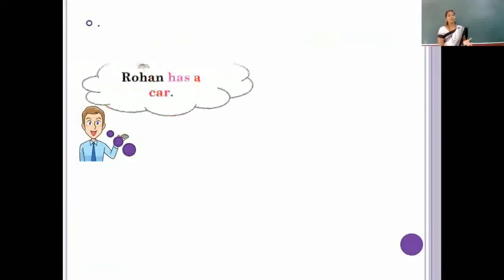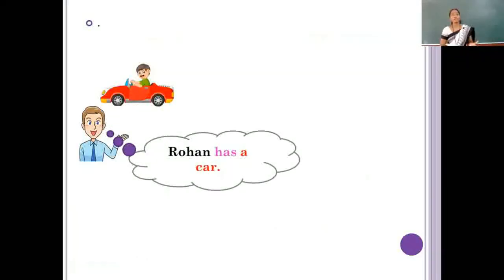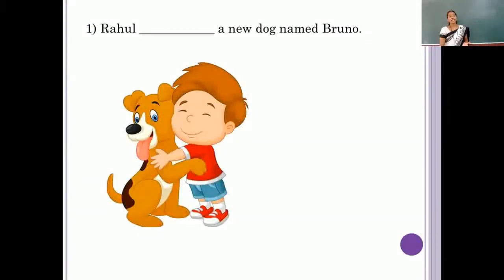In the same way, if we are speaking about a boy, suppose the name of this boy is Rohan, we can say Rohan has a car. So like this, we can use has and have in the sentences to show belonging.